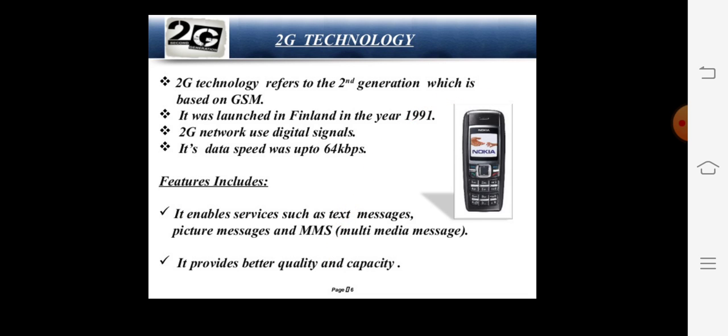The key features of 2G: it is based on GSM and GPRS, and was launched in Finland in 1991. It uses digital signals, with speeds up to 64 kbps. It can send MMS — multimedia messages — and provides better quality and capacity than first generation devices.